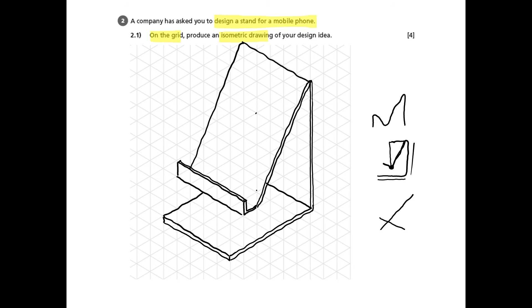An isometric drawing of a very simple mobile phone holder. There's one line missing I've just seen, just down there, that little extra fold where the mobile phone would slot in.